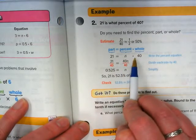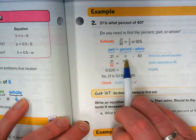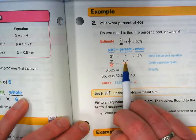And so we're going to set up our equation as 21 is equal to, the percent is going to be a variable, times the number we're given, 40.